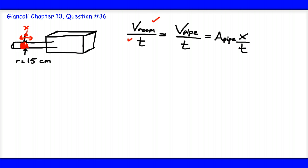So now I can say, all right, well, that's going to be equal to the area of the pipe times the velocity of the air flowing through the pipe. And that's ultimately what I'm looking for here, that velocity V.